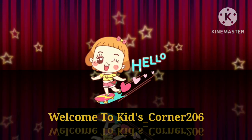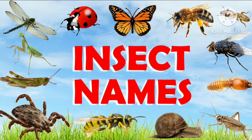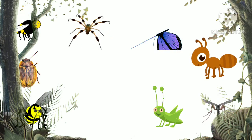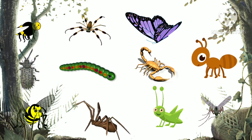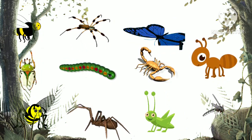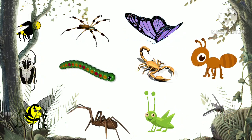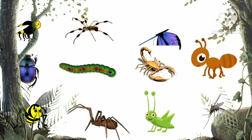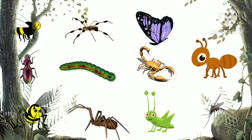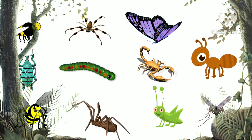Hello kids, welcome to Kids Corner. Today we are going to learn insects, which are small creatures with three pairs of legs, a body with three main parts — a head, thorax, and abdomen — and a tough shell-like outer covering. Insects do not have a backbone. Most insects have one or two pairs of wings and a pair of antennae. So let's learn insect names.